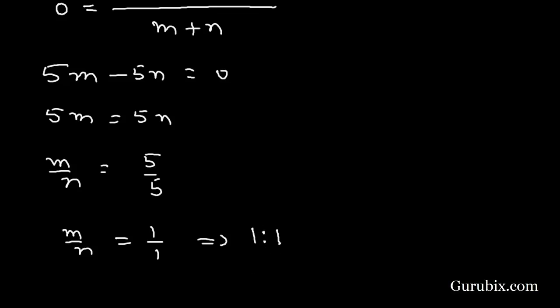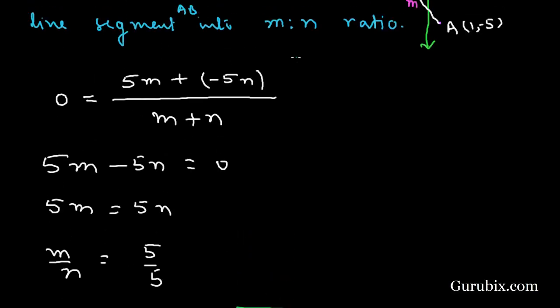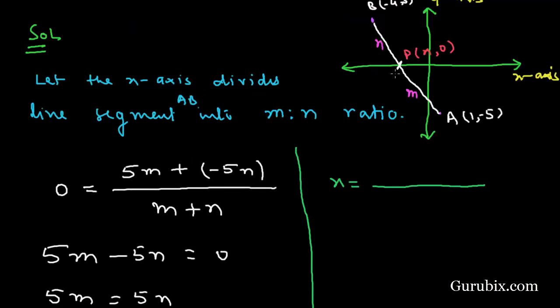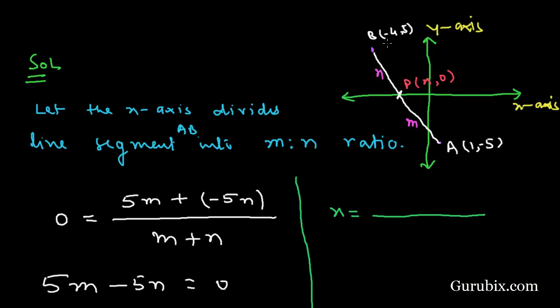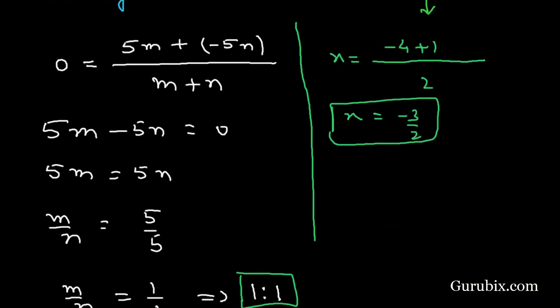Now we shall find the x-coordinate of point P by using the section formula. For that we observe that P is the midpoint of AB because the ratio is 1:1. Therefore x = (-4 + 1)/2, which means -3/2. Therefore the coordinates of P are (-3/2, 0). This is the solution of the question. Thank you.